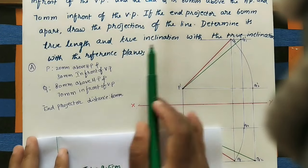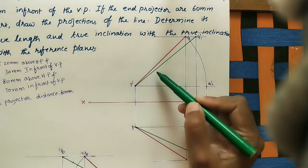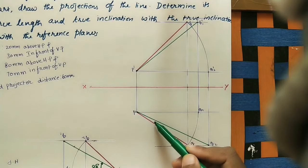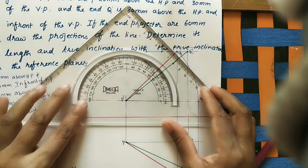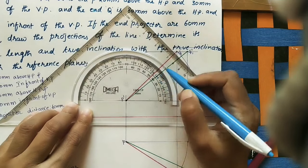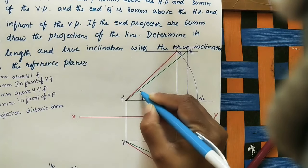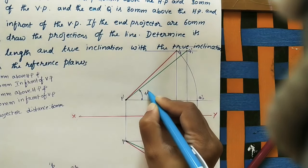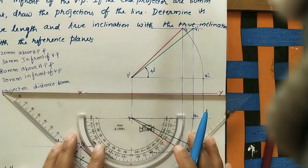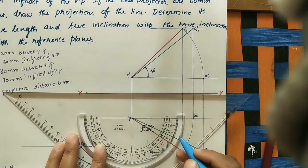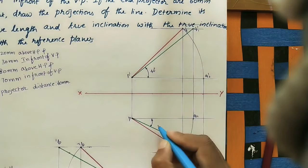We also need to find the true inclination with the reference planes. The true length line P-Q1-dash in the front view is making 40 degrees with the HP — mark this angle with sharp arrows. And the true length P-Q2 in the top view is making 25 degrees with the VP. Keep the protractor and mark the angle — it is 25 degrees.